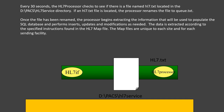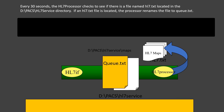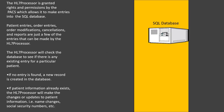The data is extracted according to the specified instructions found in the HL7 map profile. The map files are unique to each site and for each sending facility. The HL7 processor is granted rights and permissions by the PACS, which allows it to make entries into the SQL database. Patient entries, order entries, other modifications, cancellations, and reports are just a few of the entries that can be made by the HL7 processor.